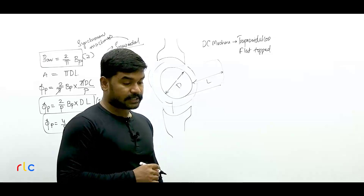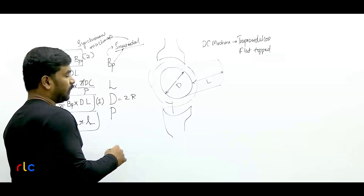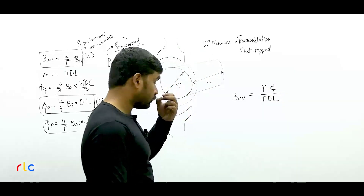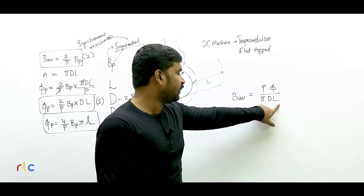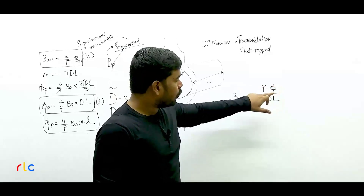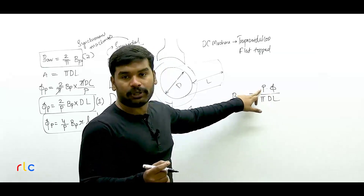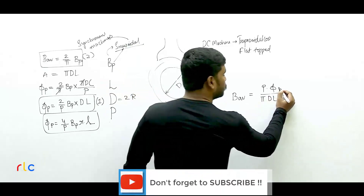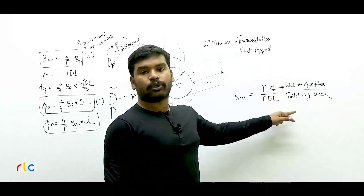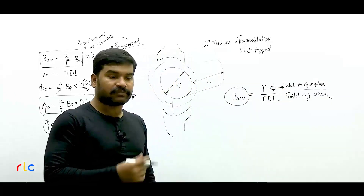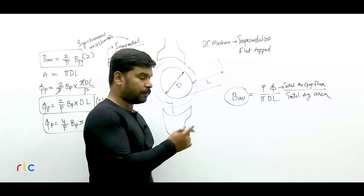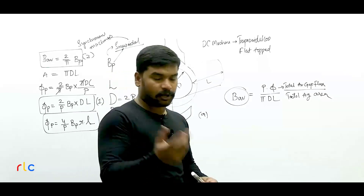Looking at the fifth statement: B_average equals P×φ divided by πDL. Let's investigate. πDL is the total area of the air gap. P×φ, where φ is the average flux per pole, equals the total air gap flux. So total air gap flux divided by total air gap area gives average flux density — which is correct. The fifth statement is correct, and the sixth one is wrong. Therefore, the answer is option A: formulas 1, 2, and 5 are the correct ones.